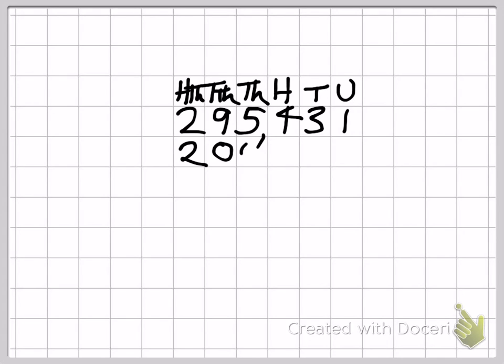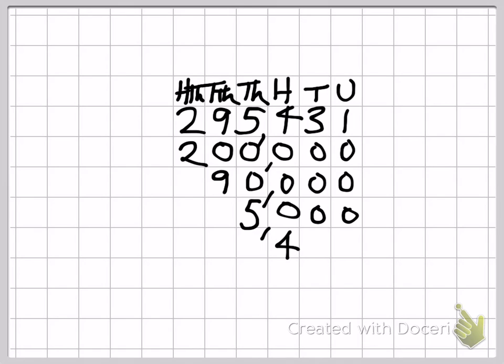So the two here will have five zeros after it. It will be 200,000. The nine will have four zeros which is 90,000. The five is five individual thousands. Then we've got the four is 400, the three is 30, and the one is just one unit. Add them all up together we get the number we started with.